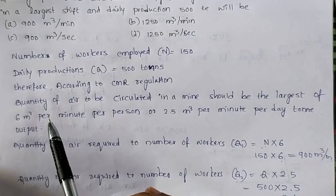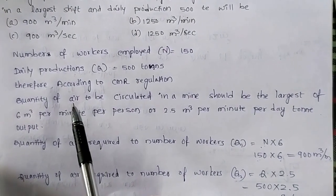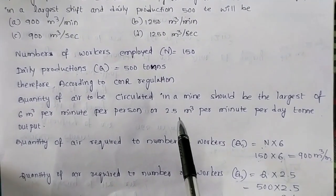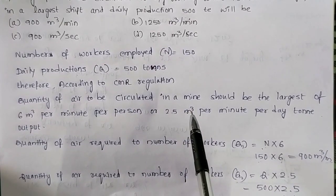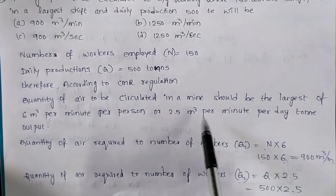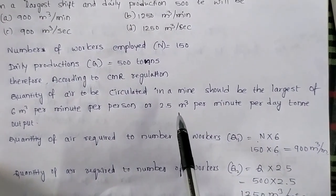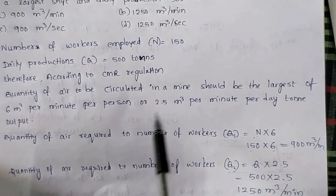So here the quantity of air required to one worker is 6 meter cube per minute according to regulation, and 2.5 meter cube per minute per day ton output according to tonnage.